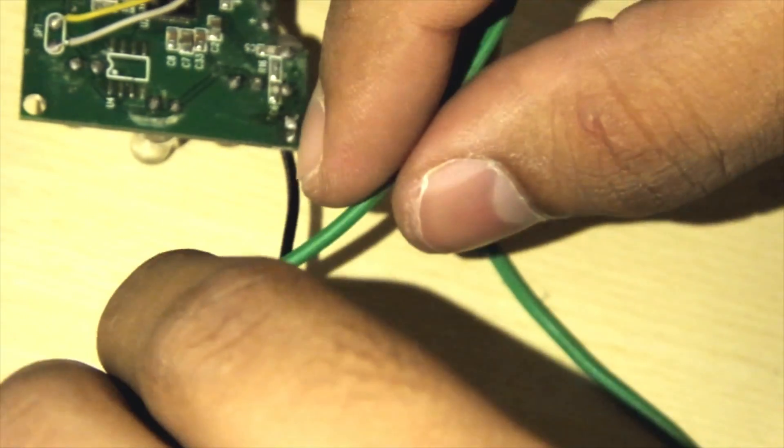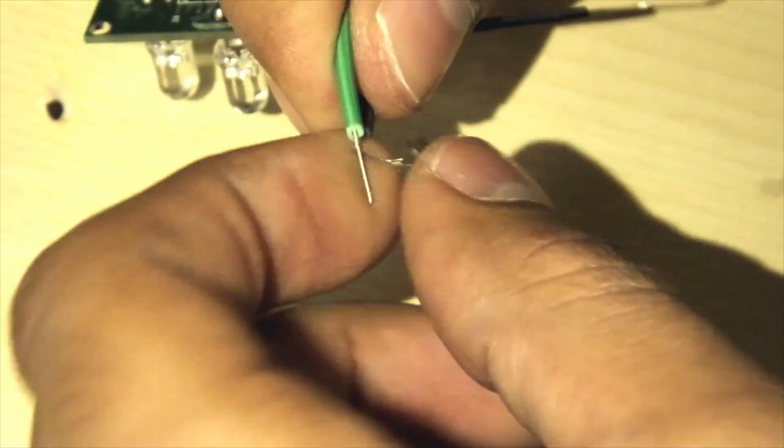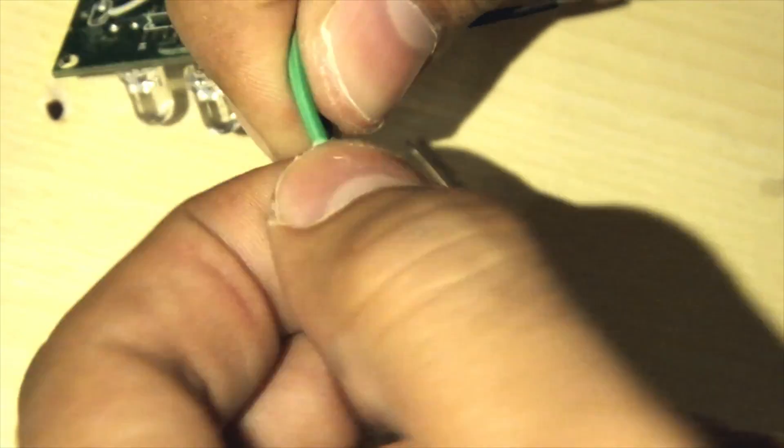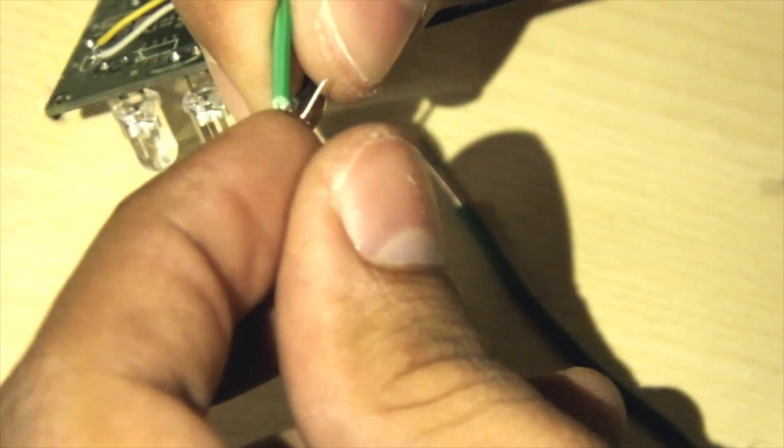Strip two thicker wires and connect them to the thin wires. Now solder these in place. Make sure you don't use copper wire at all for this.